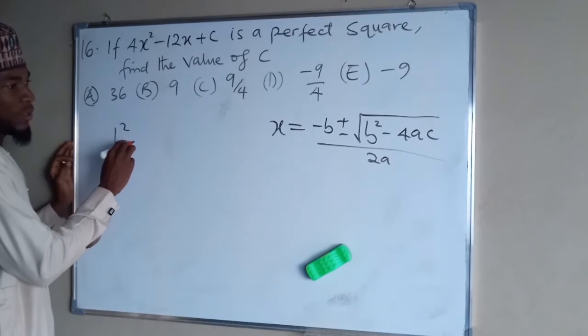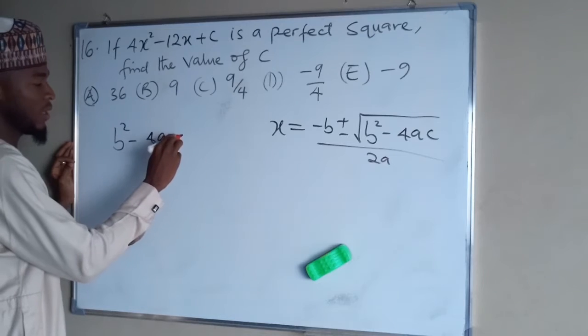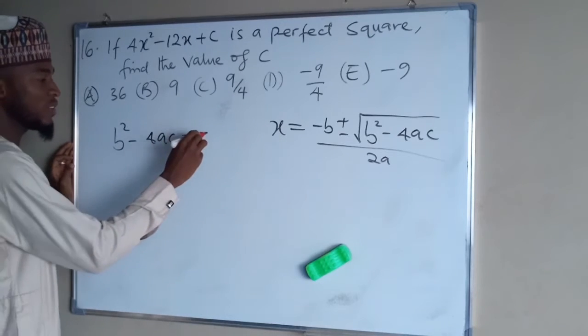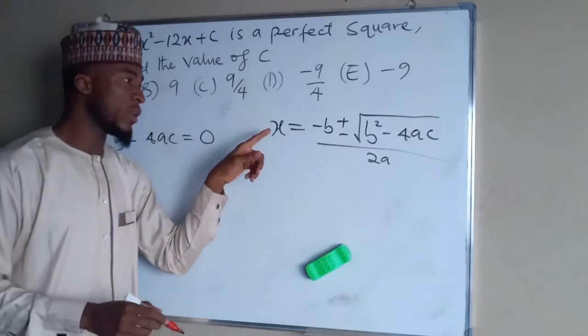If B squared minus 4AC, if the value under that square root is equal to zero, it means the quadratic equation is a perfect square.